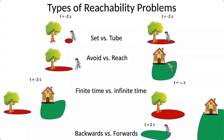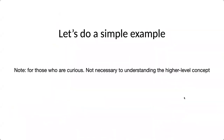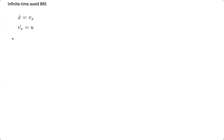We're going to focus on the infinite time safety case, since this is the focus of control barrier functions — a subset of reachability analysis looking at avoiding an obstacle for an infinite time horizon. Let's walk through a very simple example. Note this is not necessary to understand the higher-level concept, but it helps to walk through a simple toy example for how we do reachability analysis in actual code.